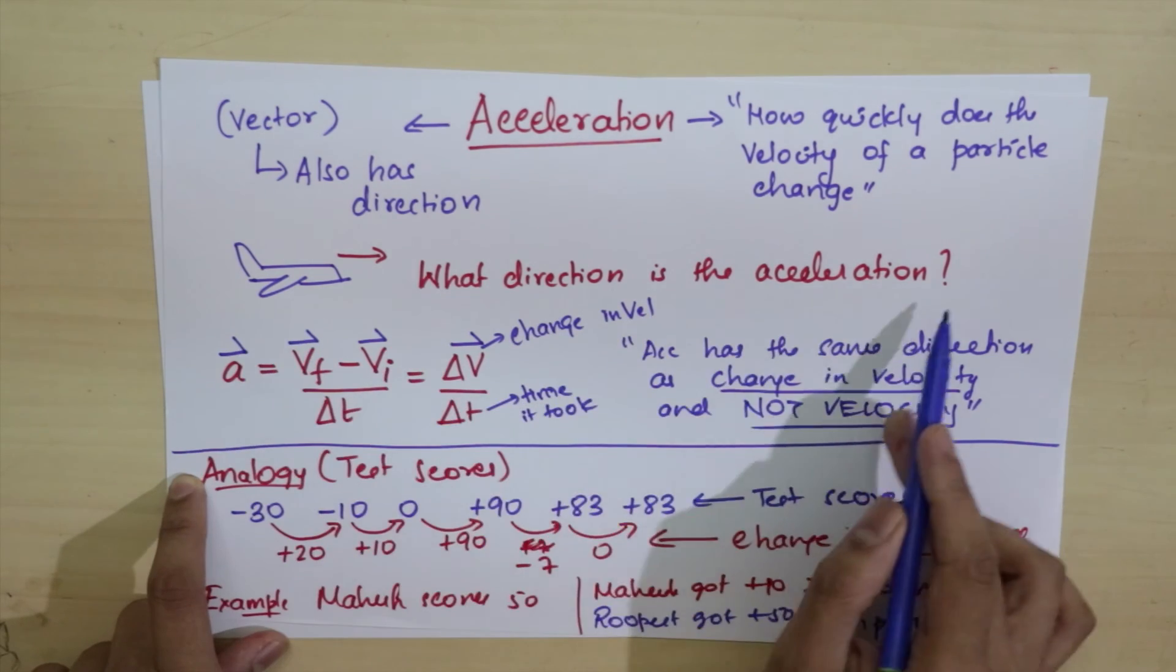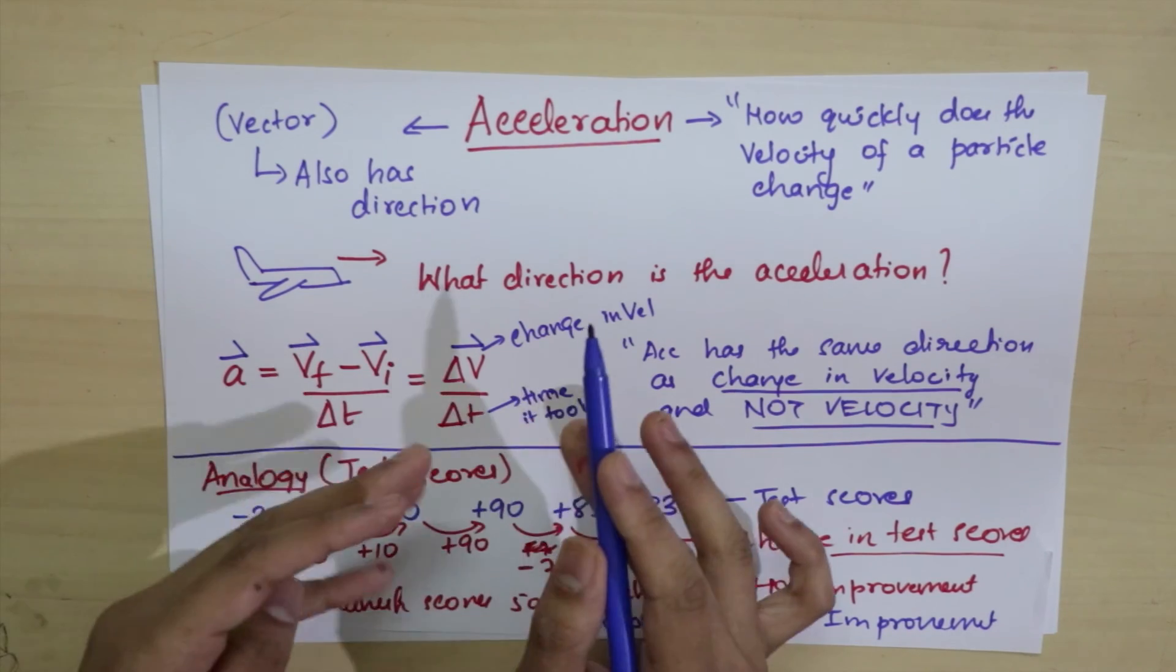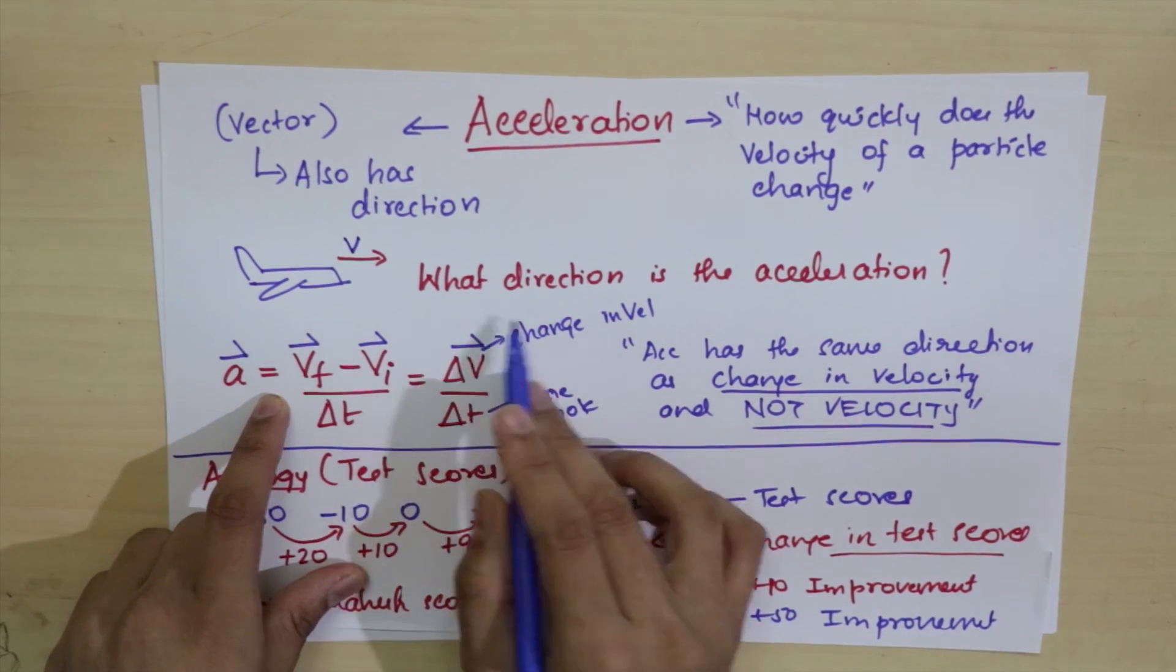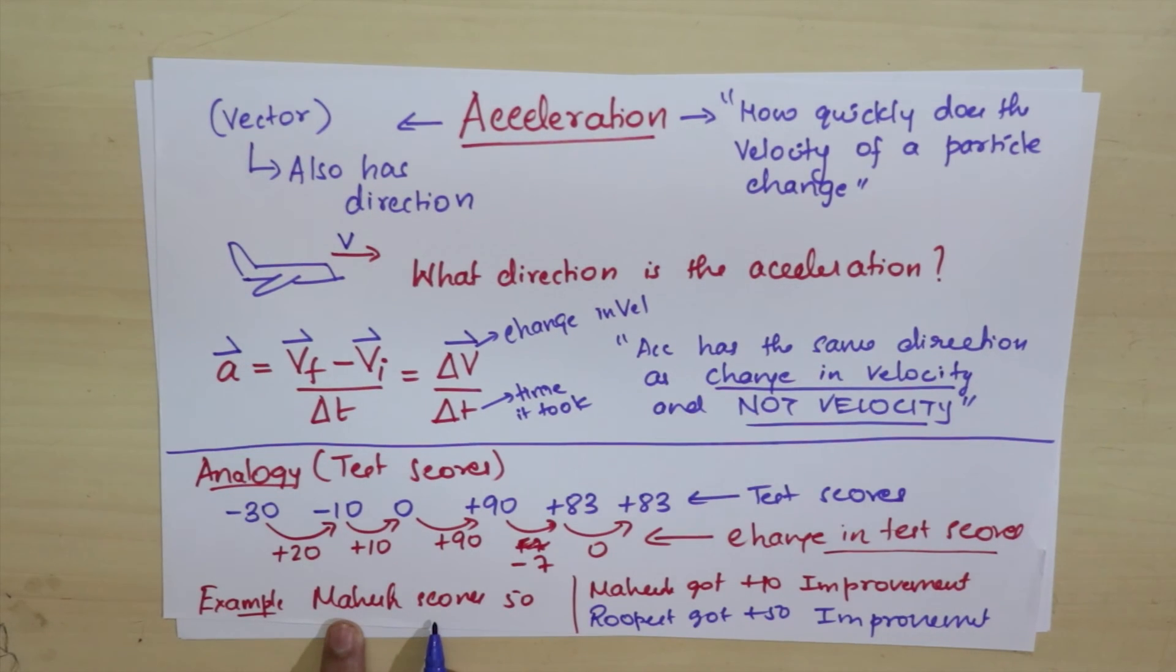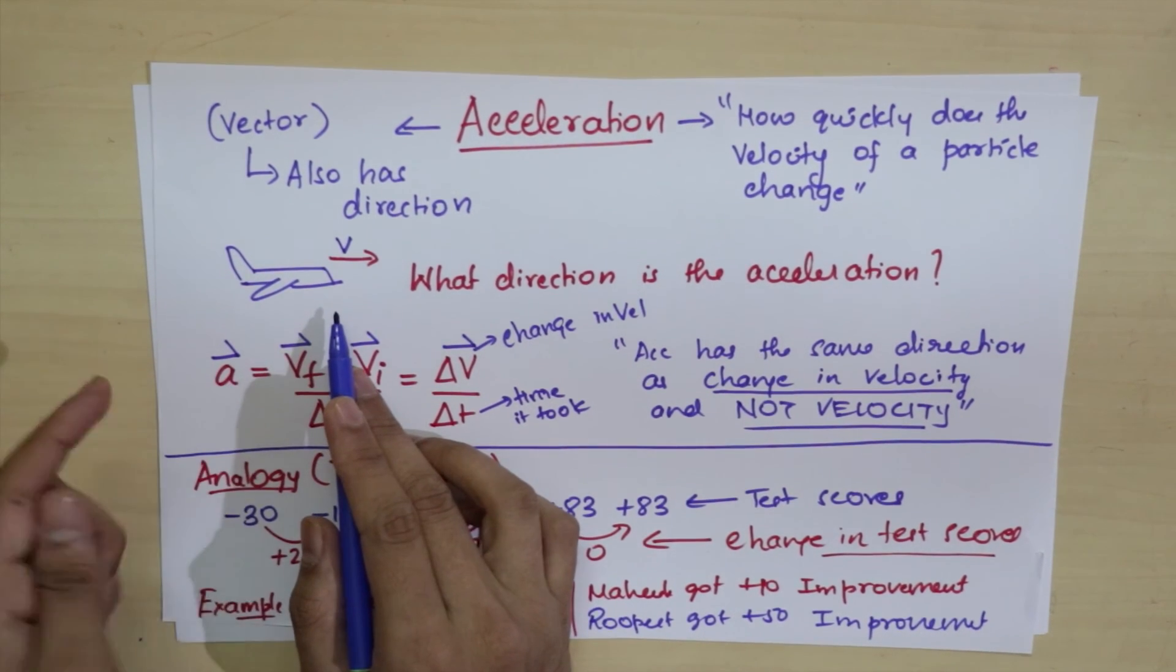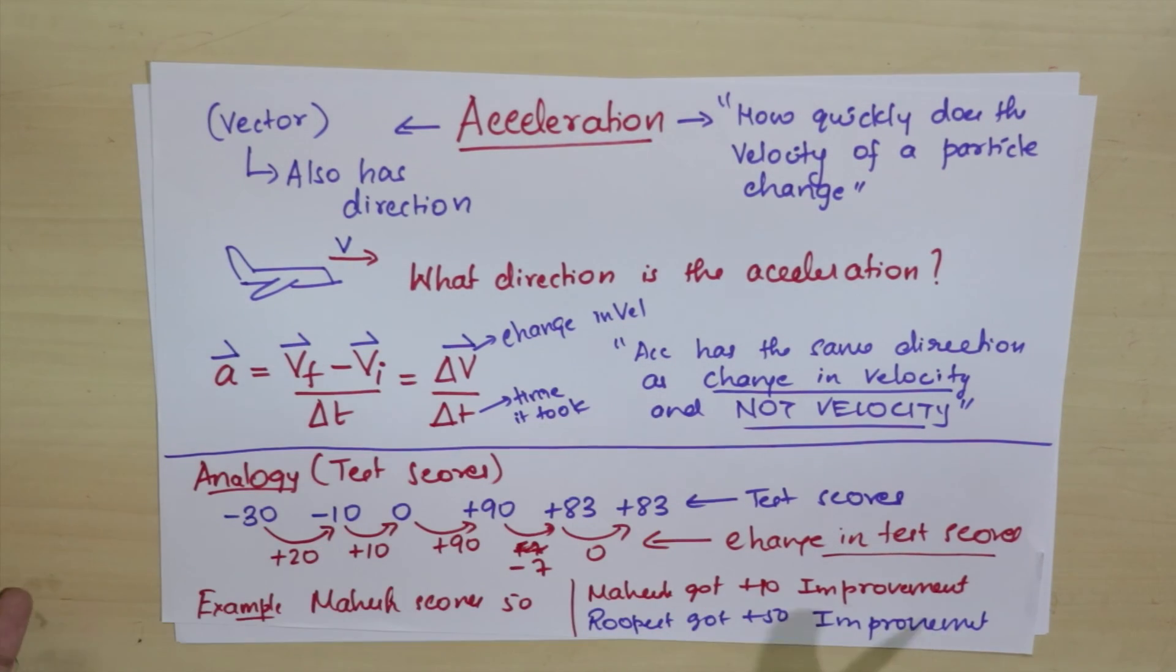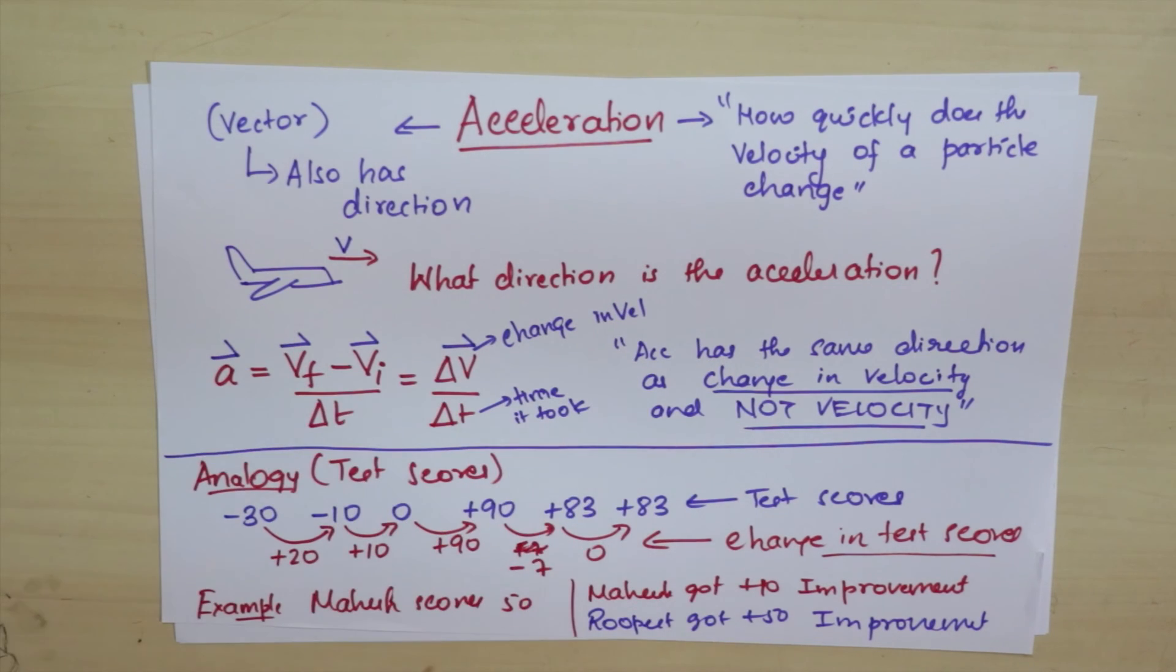So let's see what the answer to this question is. I told you the aeroplane is moving towards the right, so the velocity is towards the right. What direction is the acceleration? This question is like asking for improvement when I only gave you the current test score. The simple answer is you cannot tell. The acceleration could be in any direction.